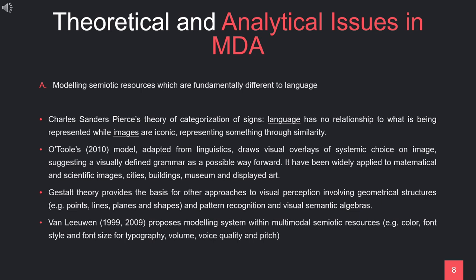However, most semiotic resources are fundamentally different to language. Based on Charles Sanders Peirce's theory of categorization of sign, language is a symbolic sign system which has no relationship to what is being represented, while images are iconic because they represent something through similarity. Therefore, analytic approaches and frameworks based on linguistic models have been questioned. However, O'Toole's 2010 model, adapted from linguistics, has been widely applied to mathematical and scientific images, cities, buildings, museums, and displayed arts. The theoretical basis of O'Toole's model is Gestalt theory, where images are composed of interrelated parts, and he draws visual overlays of systematic choice on the image, suggesting a visually defined grammar as a possible way forward.